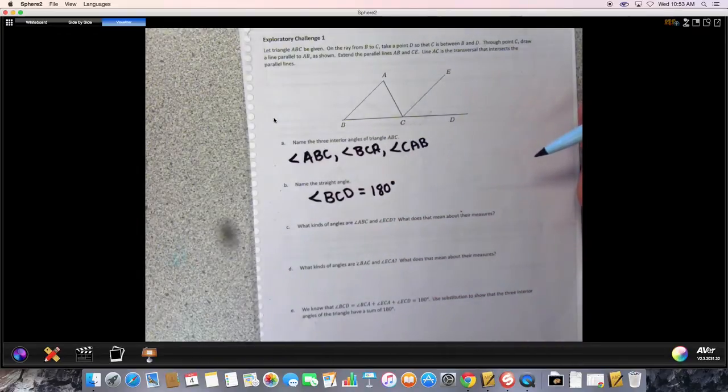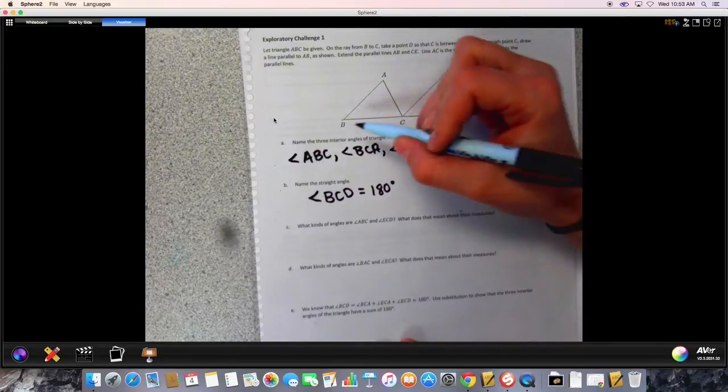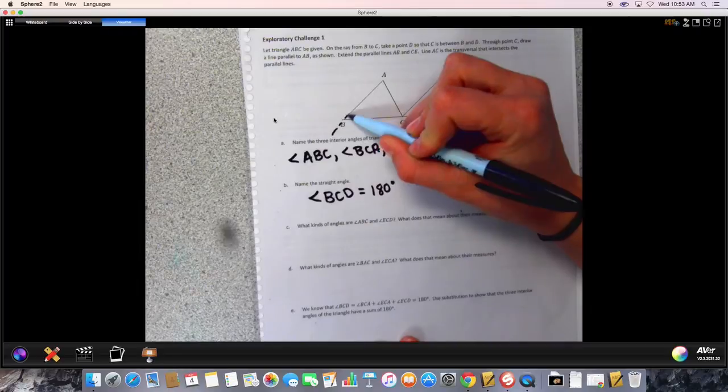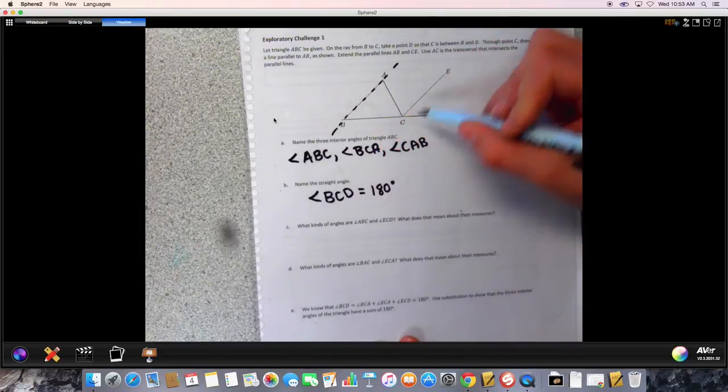To help us out here, we want to highlight some parallel lines, so AB right here, and I'm going to put some dotted lines, is parallel to CE.